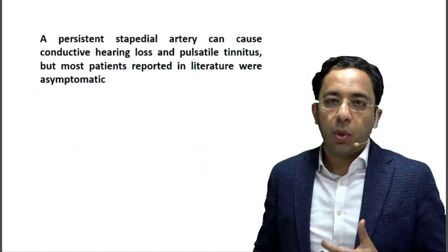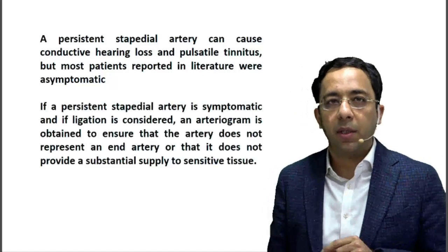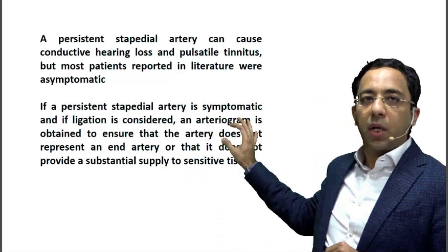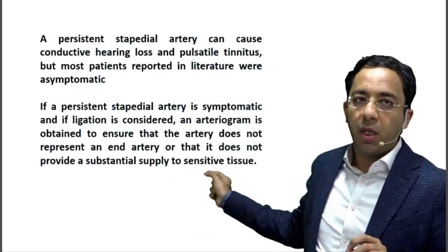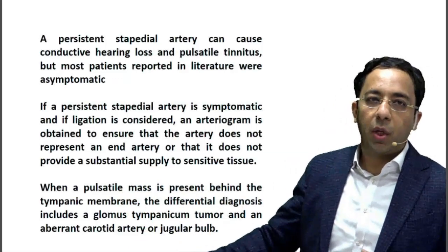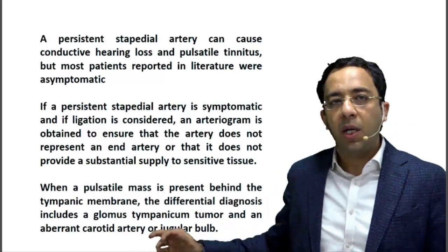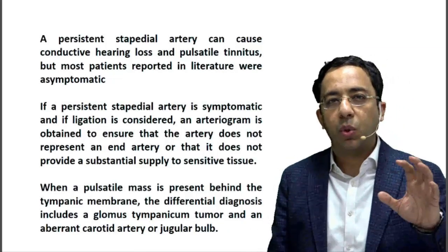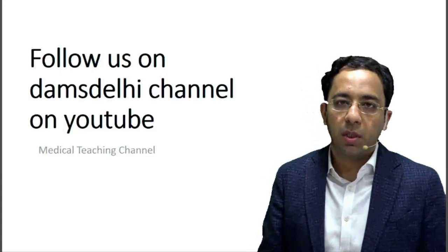Patients with persistent stapedial artery are usually asymptomatic but may present with conductive hearing loss or tinnitus, as in our patient. If symptomatic, ligation may be considered, but an arteriogram is essential beforehand to determine if it is an end artery or supplying sensitive tissue. The classic differentials for a pulsatile mass behind the tympanic membrane include glomus tympanicum, aberrant carotid artery, and jugular bulb — with persistent stapedial artery added to that list. Follow DAMS on YouTube or Facebook for more such videos.